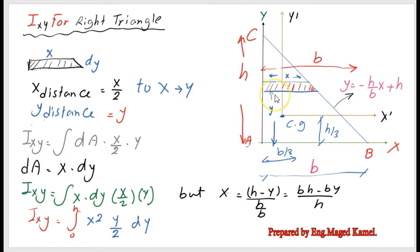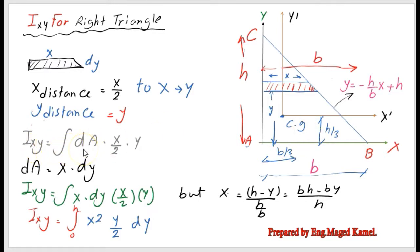If we investigate the strip, we will find that the CG x-distance would be x over 2, since the width is considered as x and the y-distance is the same as y. For Ixy, it is equal to the integration of dA multiplied by x over 2, multiplied by y.